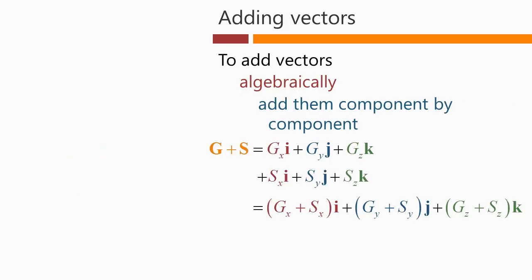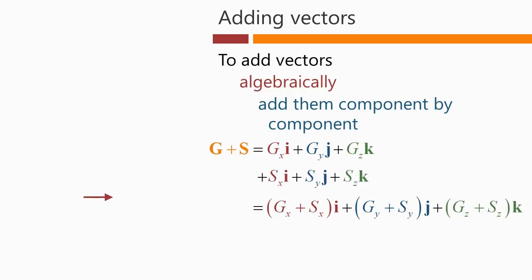We can also add vectors algebraically instead of graphically. The way to do it is to add them component by component. So G plus S is the set of three components of vector G plus the set of three components of vector S, adding together the components in each direction. Here is our first component of vector G along the x direction, and here is our component of vector S along the x direction — in this case it happens to be going in the other direction, so the net vector along x is this final vector here.